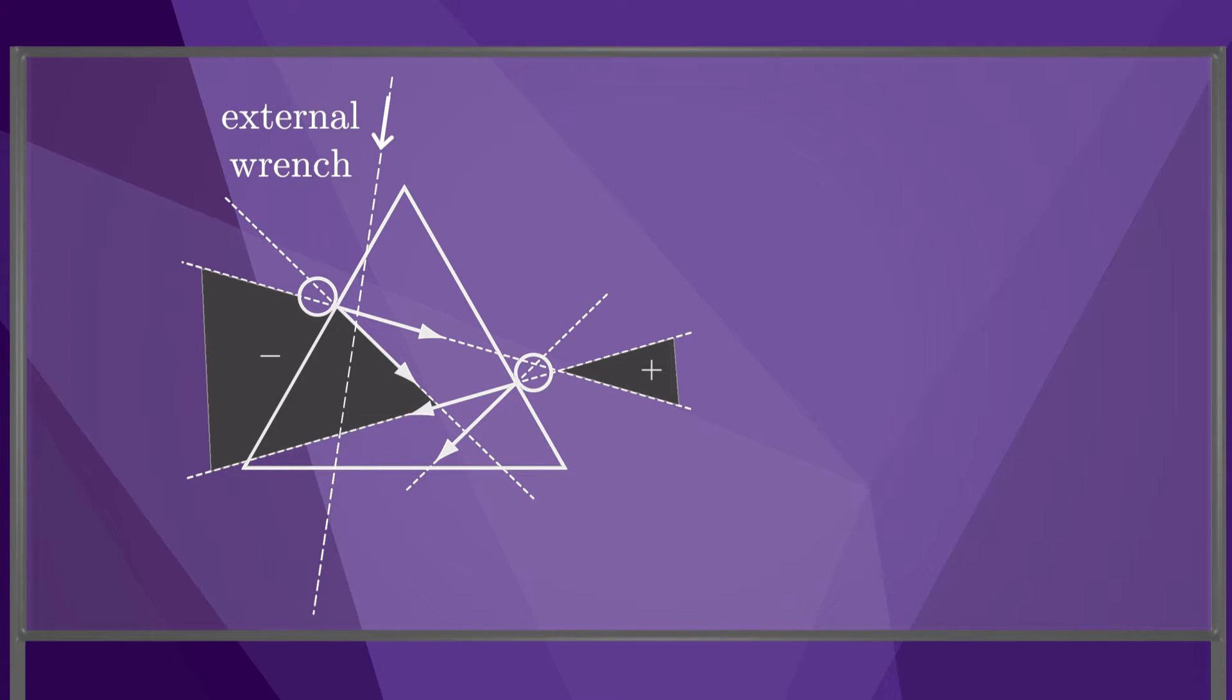If this external wrench is applied, then the fingers would need to be able to create the opposing red wrench to prevent the triangle from moving. Since the line of action of the red wrench passes through the region labeled minus, it cannot be generated by the two frictional contacts. Therefore, the triangle would move because of this external wrench.